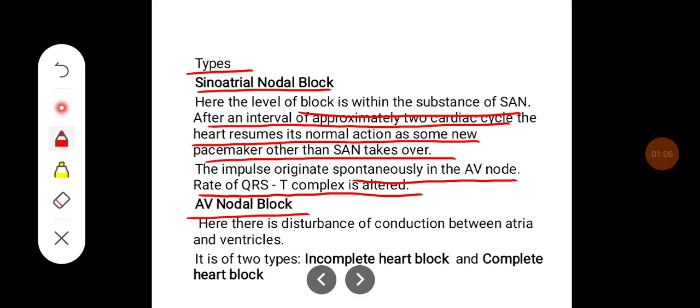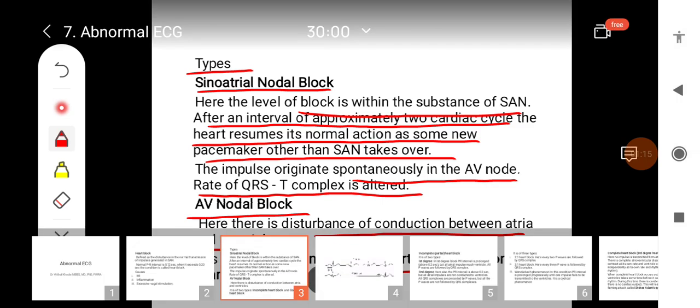AV nodal block. Here there is a disturbance of conduction between atria and ventricles. There are two types of AV nodal block: incomplete heart block and complete heart block.